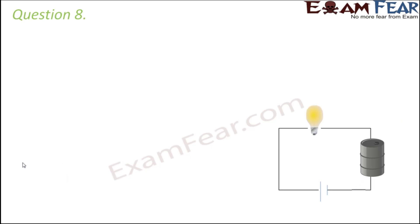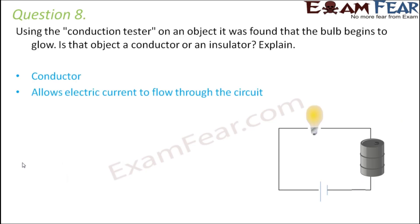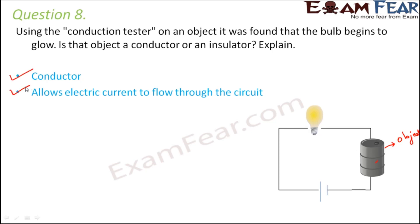Question number eight — A conduction tester is used on an object and the bulb begins to glow. Is that object a conductor or an insulator? If the bulb glows, it means current is flowing through the circuit, which means the material is allowing current to pass through it. So it is definitely a conductor. This type of circuit is called a conduction tester circuit.